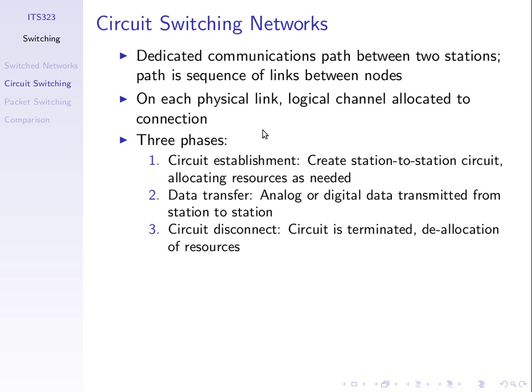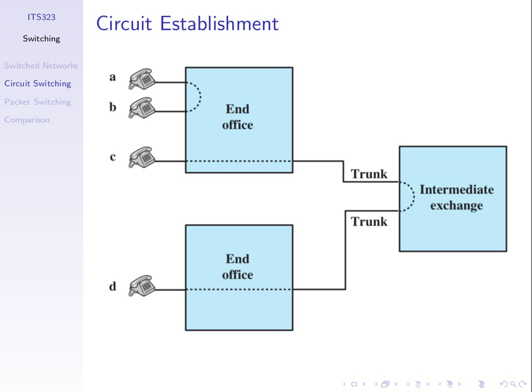Once you establish a circuit, there's effectively a link from source all the way to destination. Even though it goes via multiple links, when you transmit a signal at the source, the circuit is set up so that signal will flow through all links and get to the destination as transmitted. Let's look at some examples with a simpler network: station A wants to communicate with station B, with two switching nodes in between, on the path A to 1 to 2 to B.